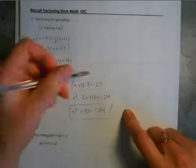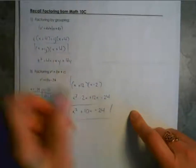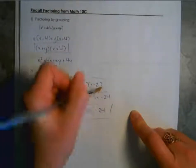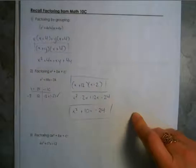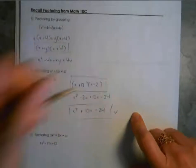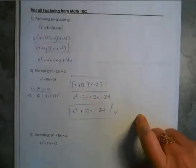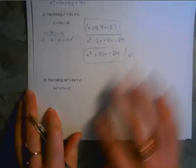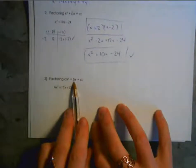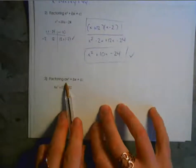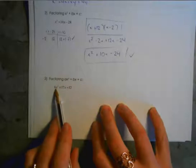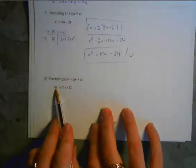I probably shouldn't have boxed that in — usually I use the box to show my answer, and this box is for checking that I did it correctly. Now we're going to move into one that's a little more complex — this is the one where you actually have an a value in front of the x squared.